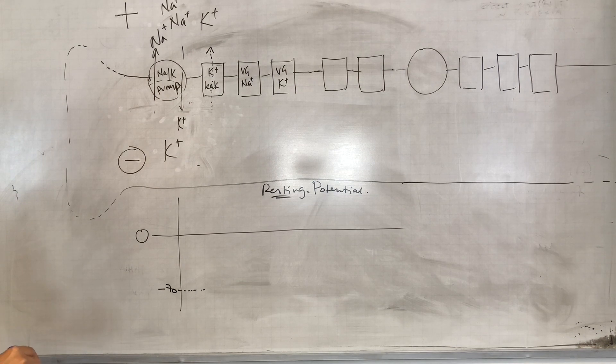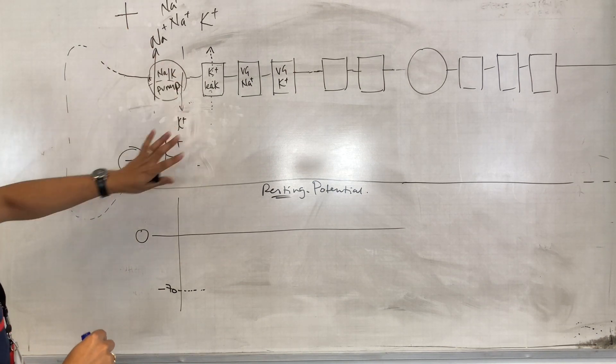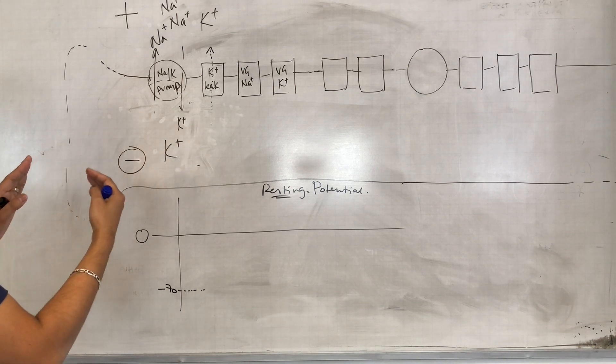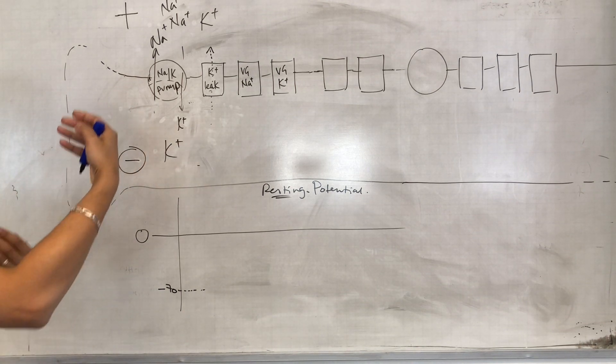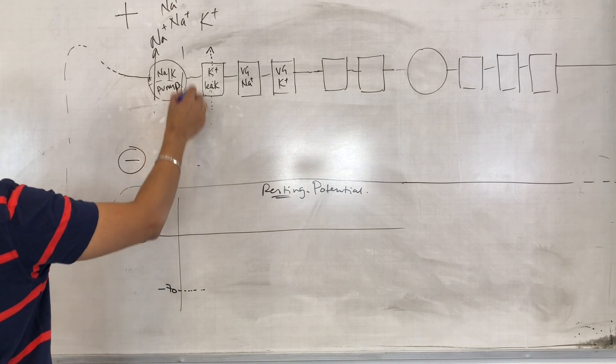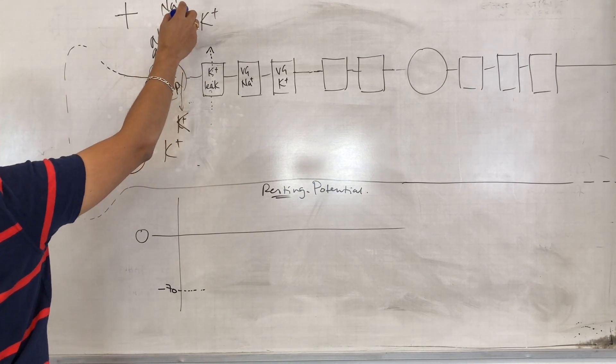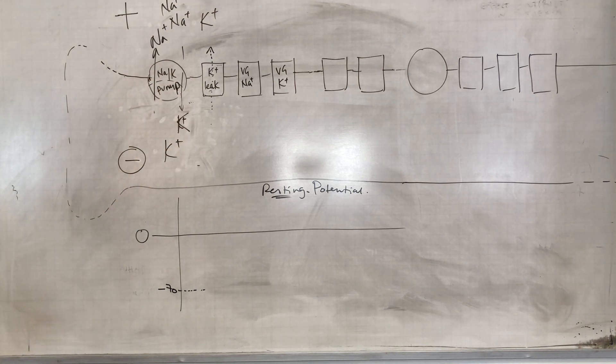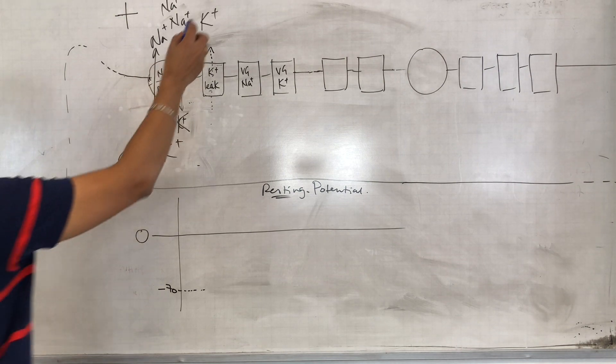So at this point, what we say is the electrical and concentration gradients for potassium have balanced out at a point where there's more potassium outside, there's more positive ions outside and less positive ions inside.